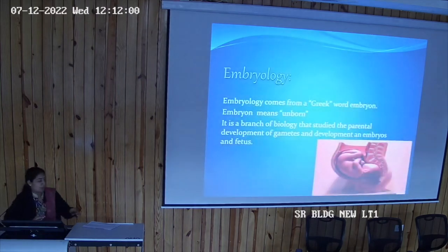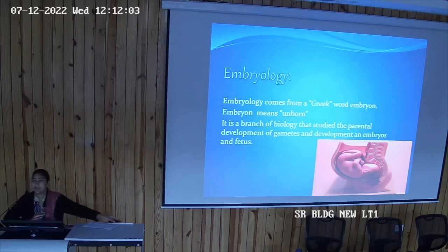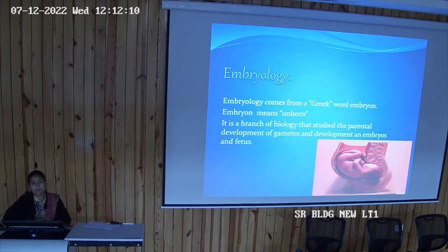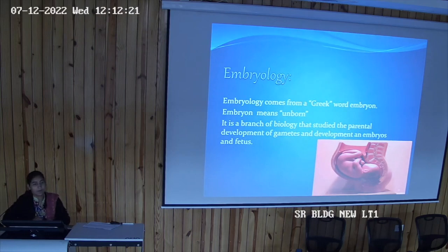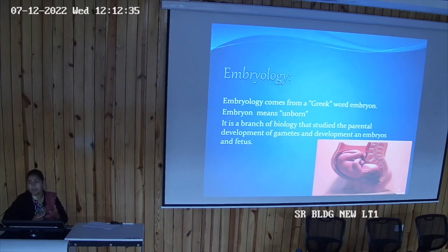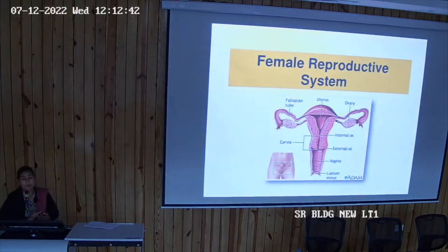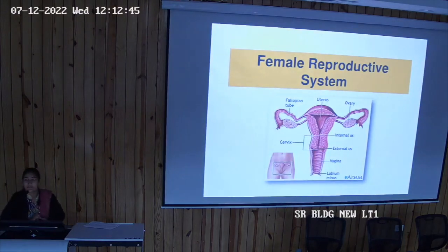In the female reproductive system, one term you are dealing with in anatomy is embryology. Embryology is taking place in the uterus, which is one of the organs of the female reproductive system. From day zero — that is from the formation of the gamete, the ova and sperm — till the formation of the fetus is the embryo. The female reproductive system includes external genitalia and internal genitalia.